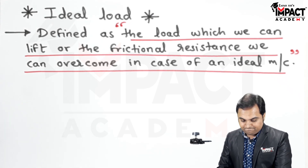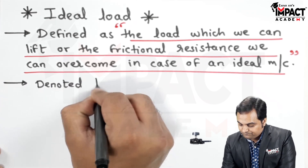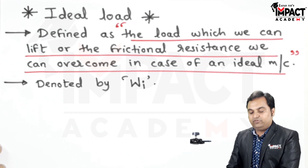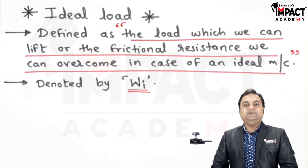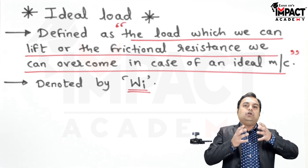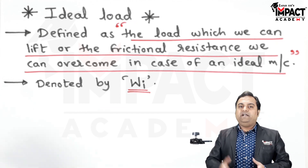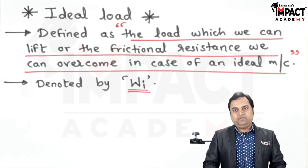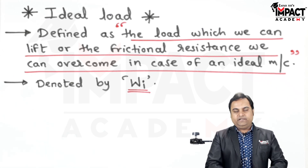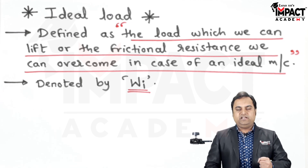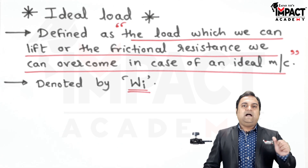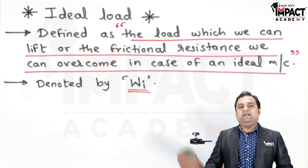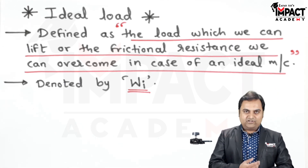It is denoted by W suffix i. Since in case of ideal machines friction is absent, compared to an actual machine we can lift more amount of weight in an ideal machine. The ideal load value would always be greater than the actual load. Whereas when we talk about effort in case of an ideal machine, the ideal effort would be less compared to the actual effort, because some amount of effort is lost in friction in case of the actual machine. So ideal effort is less, whereas the ideal load which we want to lift increases due to the absence of friction.